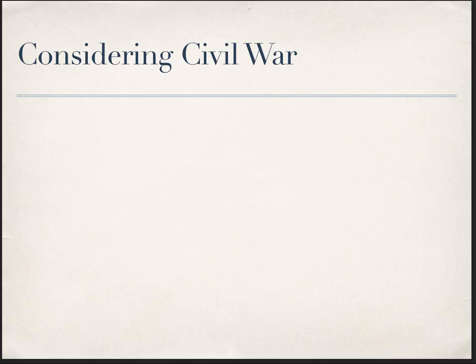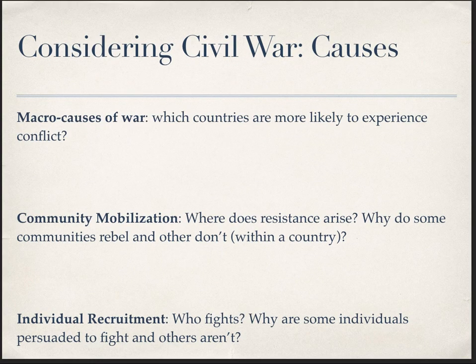You might think of these questions in roughly chronological order. The first sets of questions ask about the causes, which are the lectures we're going to go through this week. Today's lecture on macro causes of war looks at countries as the unit of analysis — why are some countries more likely to experience civil war? Then there's a mezzanine level of conflict cause literature about community mobilization: where does resistance to a government or armed group arise, and why do some communities rebel while others don't?